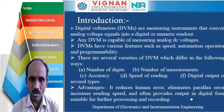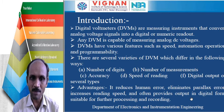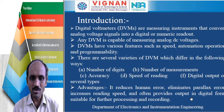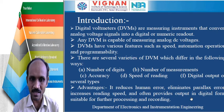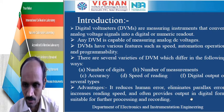The main advantages of digital voltmeters compared to analog voltmeters: in analog voltmeters the major drawback is parallax error, which occurs due to the movement of the pointer on the scale. This parallax error can be overcome by using DVMs, since digital voltmeters give the measured voltage value as a numerical readout. The main advantages of DVMs are: they reduce human error, eliminate parallax error, increase reading speed, and often provide output in digital form suitable for further processing and recording.